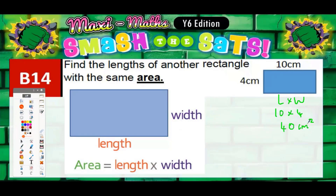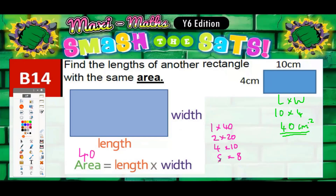We need another rectangle that also has an area of 40 but with different measurements. So we're looking for any two numbers that multiply together to make 40. We could have 1 times 40, 2 times 20, 3 won't work, 4 times 10, or 5 times 8. You can also have these the opposite way around.